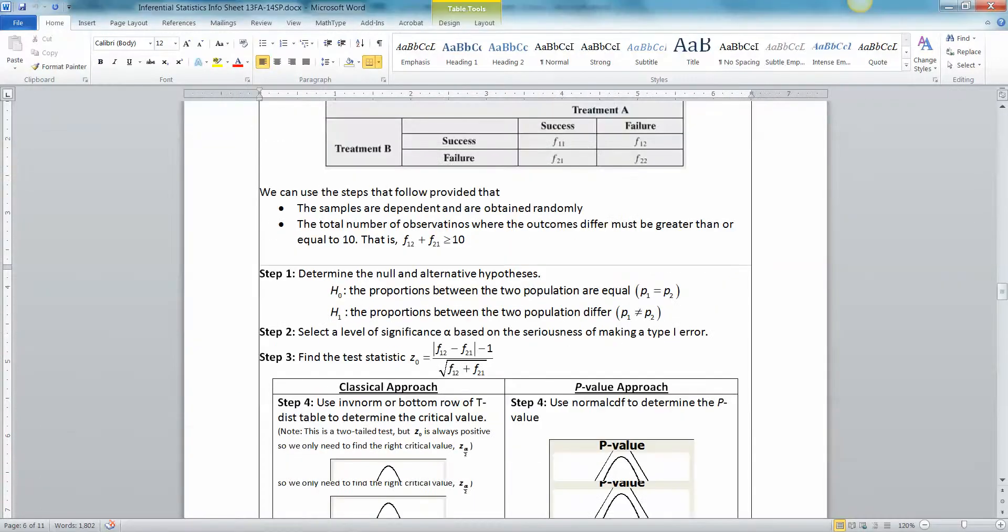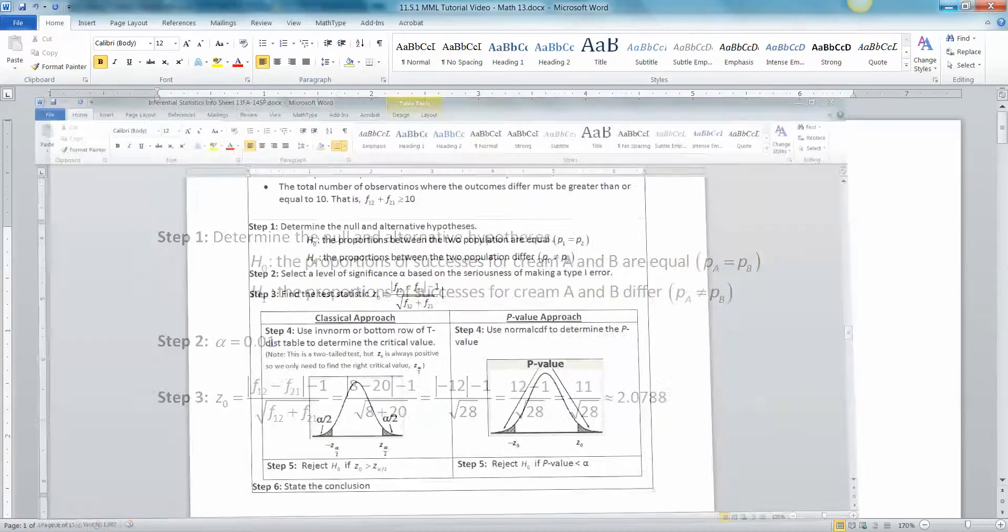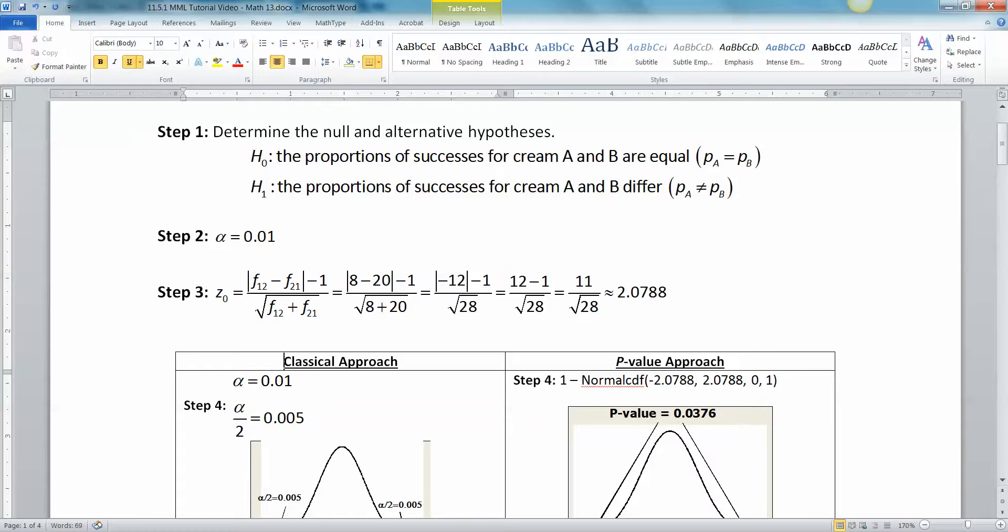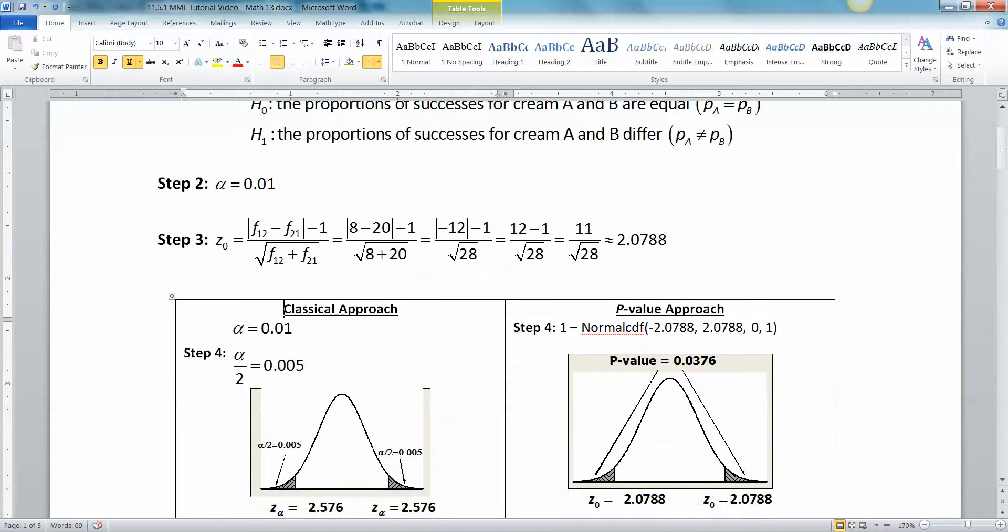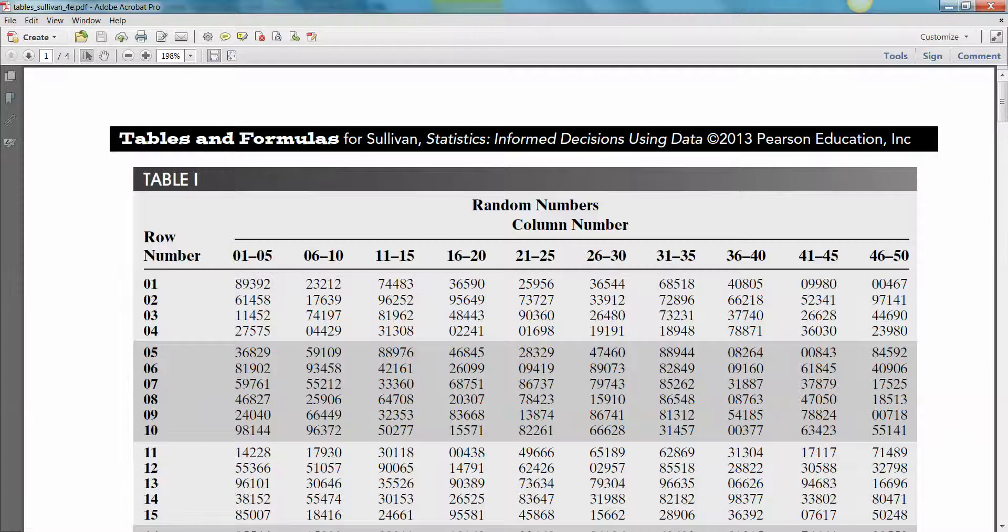Step 4, we need to draw a picture, and we're going to actually do both the classical and the p-value approach and find them both ways, just for the heck of it. Okay, so if I'm going to do the classical approach, alpha is .01, alpha over 2 is .005, and then you would use the bottom row of the t-table to find these two values, or you could use your calculator, so let me show you.